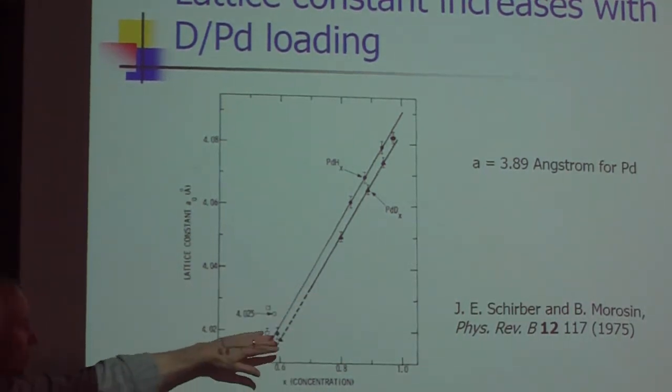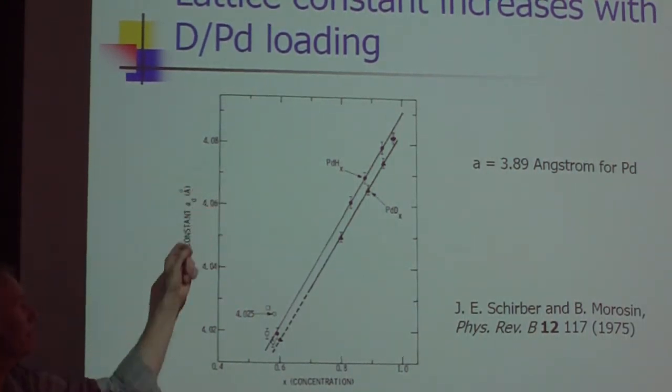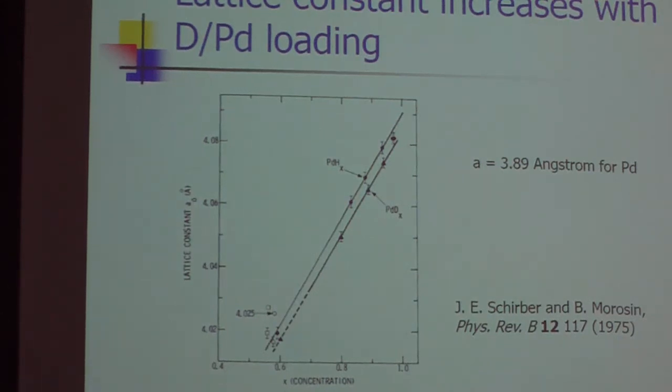And if there's no hydrogen this thing goes down to 3.89 angstroms. And it goes up for a fully loaded cathode, somewhere in the neighborhood of 4.08 angstroms.